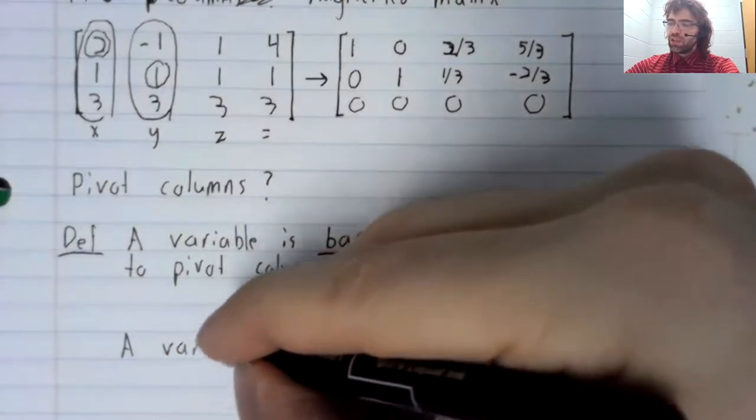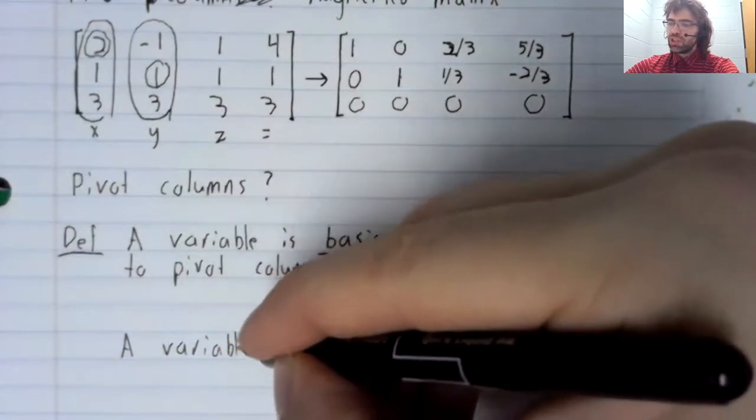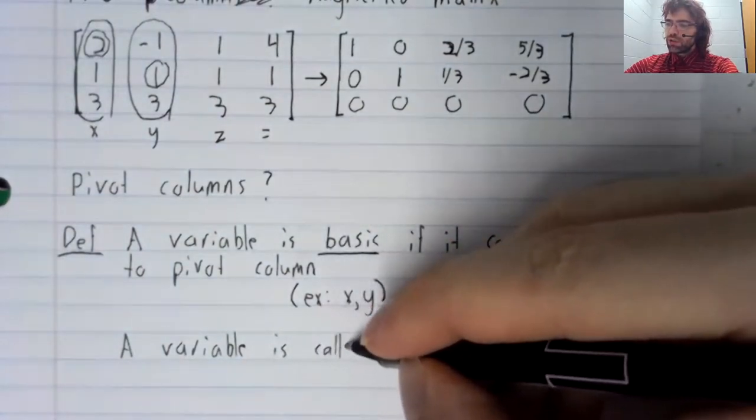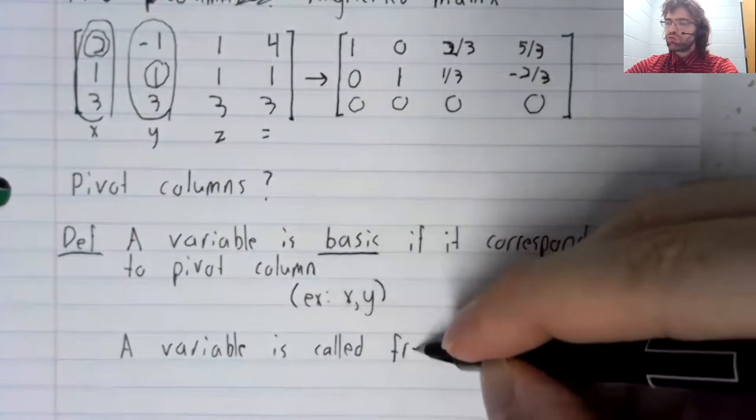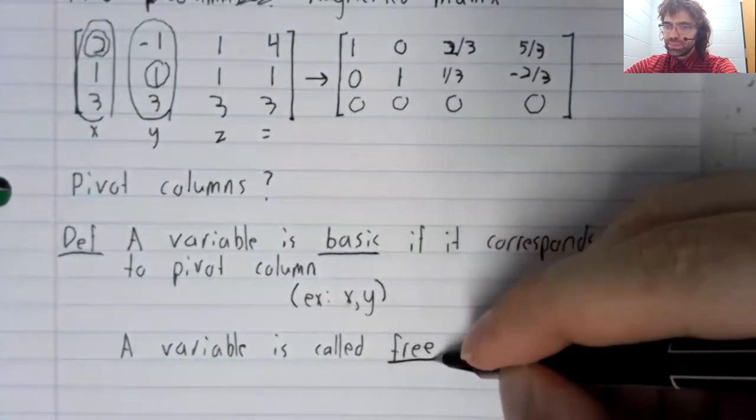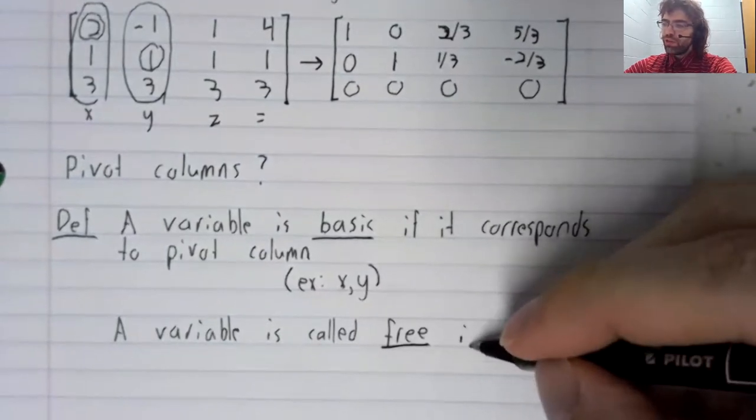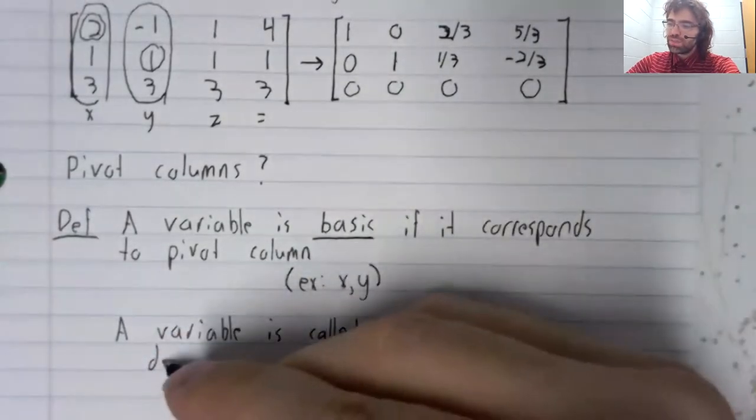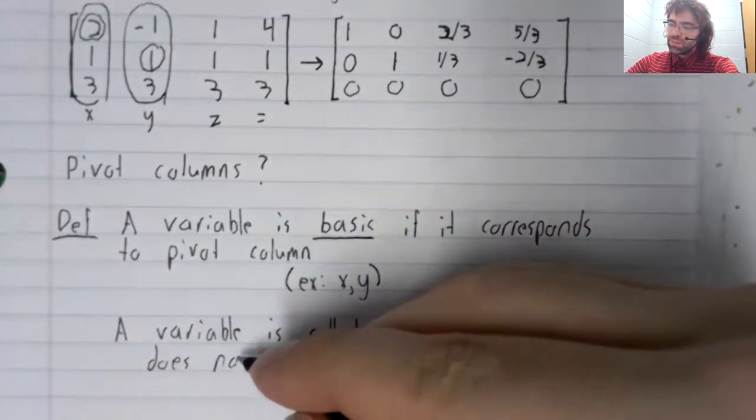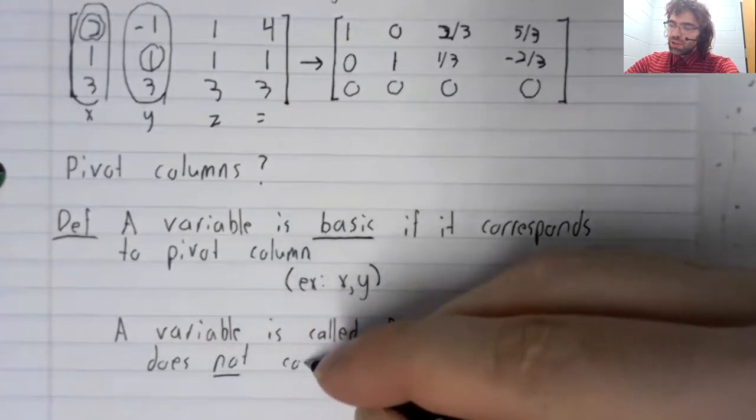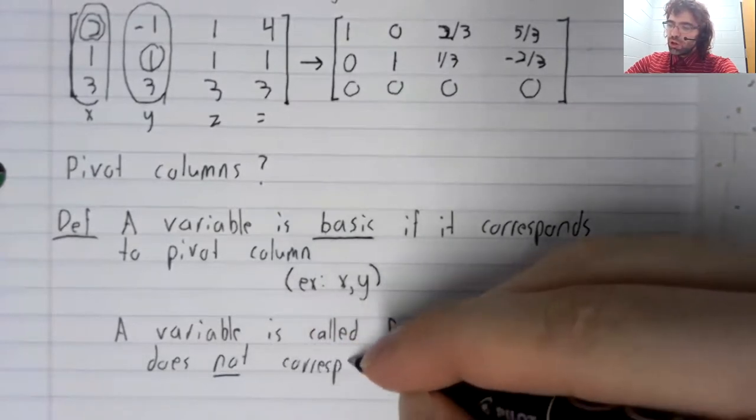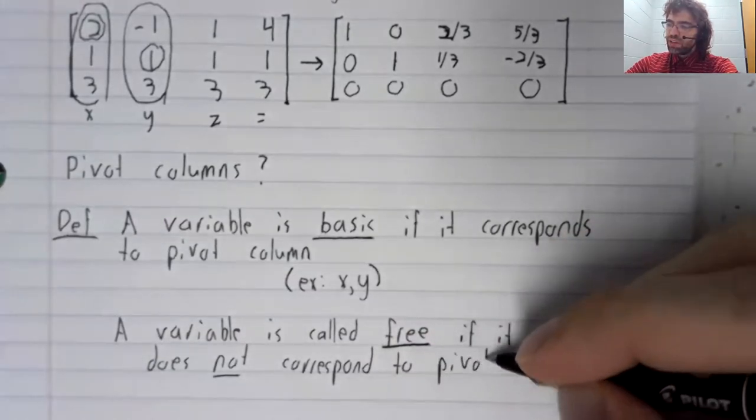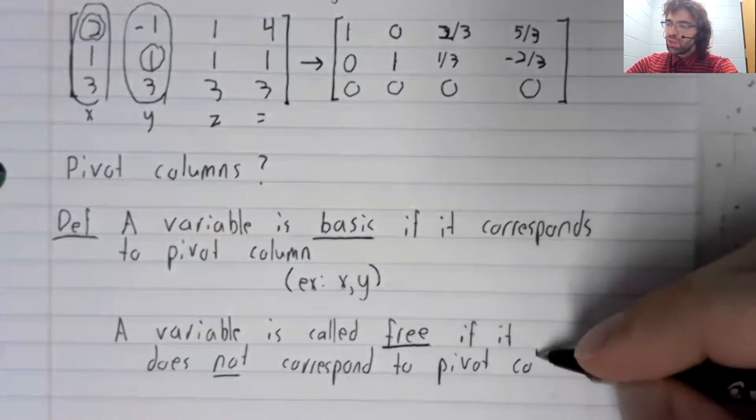And conversely, a variable is called free if it does not correspond to a pivot column.